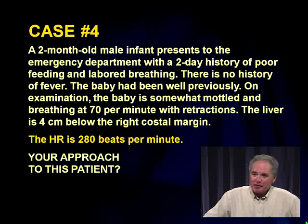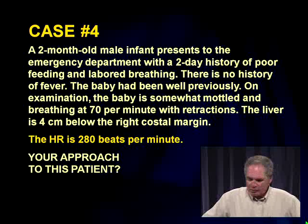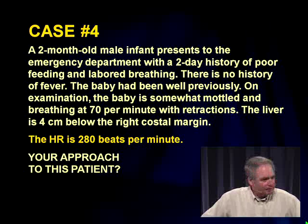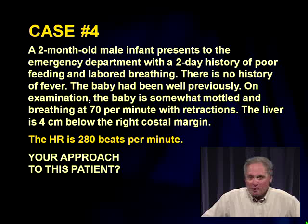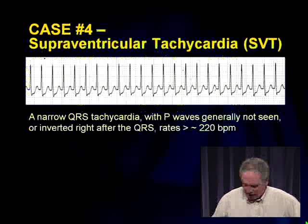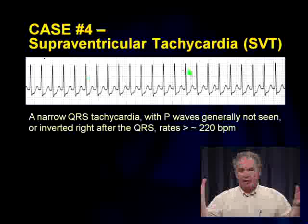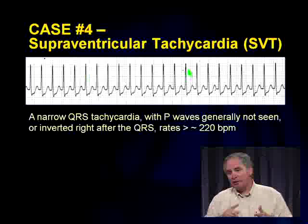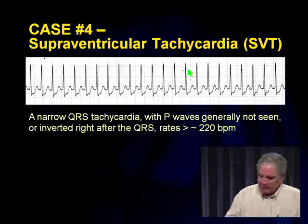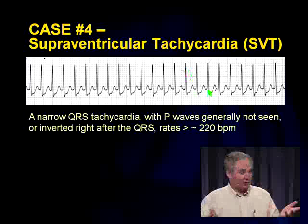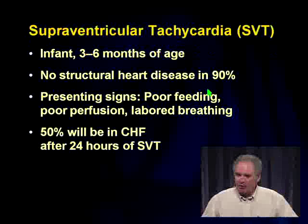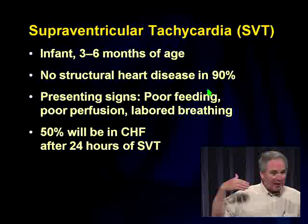Now the important stuff. A two-month-old in the ER not looking good — mottled, breathing fast, liver down, heart rate of 280 beats per minute. That's a big clue — don't chase sepsis or metabolic causes. The EKG shows a narrow QRS tachycardia at rates that exceed anything sinus tachycardia can do. Sinus tachycardia tops out around 190 to 210; not 280 or 300. No visible P waves before each QRS. This is supraventricular tachycardia.